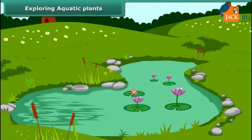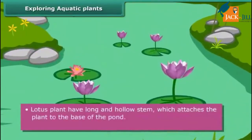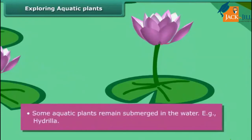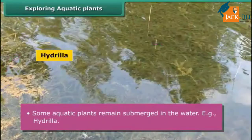You might have seen lotus floating in ponds, lakes, and seas. These plants show various adaptations to live in water. Lotus plants have long and hollow stems which attach the plant to the base of the pond. Roots are short, leaves are large and disc-shaped, which helps the plant to float on the water surface. Some aquatic plants remain submerged in the water, for example, hydrilla.